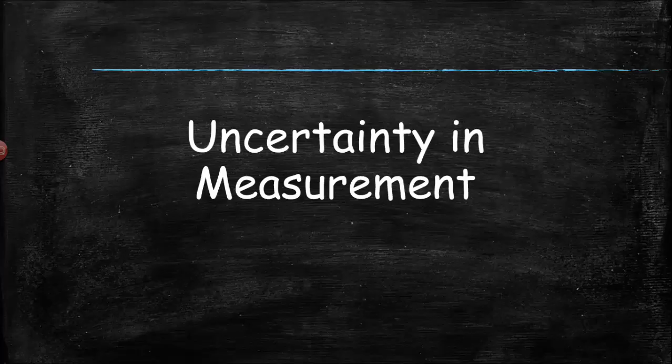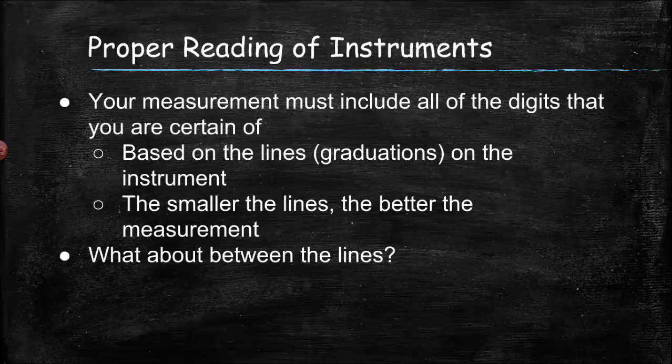We need to take a look at how to properly read these instruments. When we properly read instruments, you have to include in your measurement all of the digits that you know for sure. That's basically going to be based on the lines — what we call graduations — on the instrument itself. You look at those lines and figure out which digits in your measurement are actually certain.